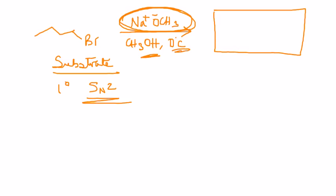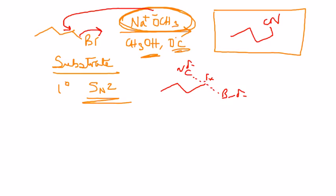Inversion of configuration is what you're seeking. Attack is going to take place from the back. Your transition state probably will look like the BR is ready to leave and the CN is pointing in the opposite direction. And then ultimately, your product will look like this.